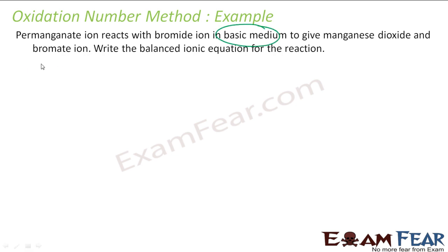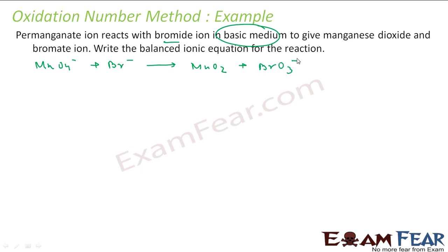Let's write the reaction first. The reaction is MnO₄⁻ reacts with bromide ion Br⁻ to give manganese dioxide MnO₂ plus bromate ion BrO₃⁻. The memory tip is: oxidation, consume water — that is step 2.